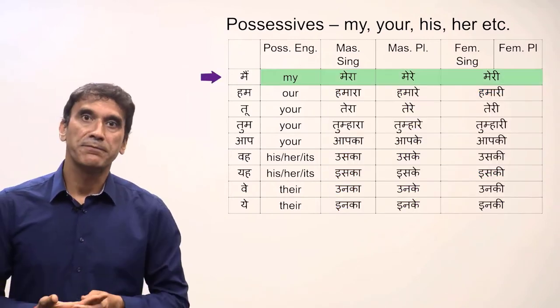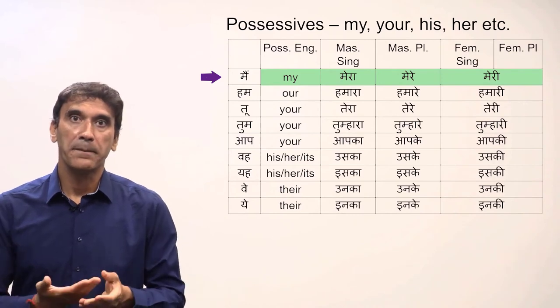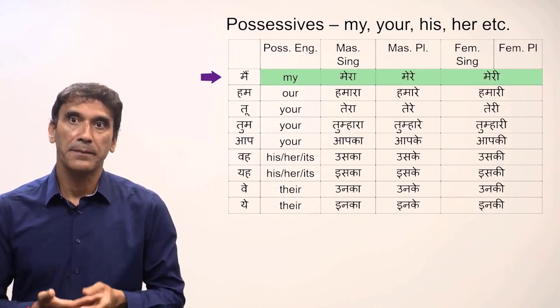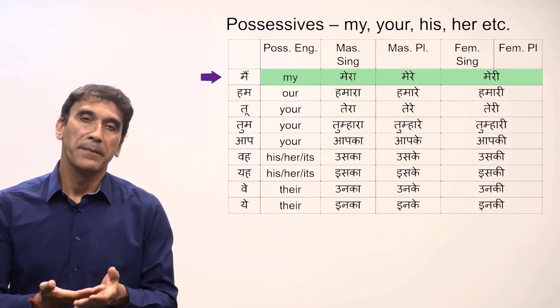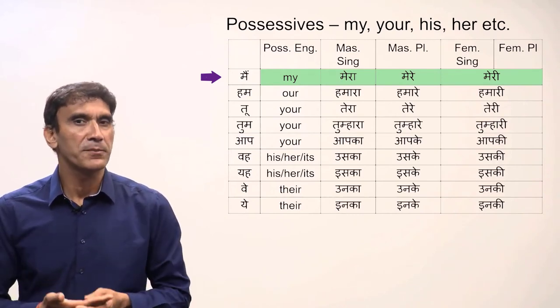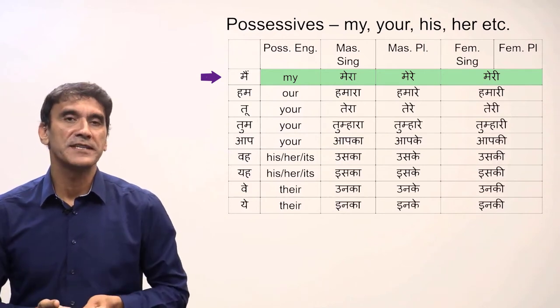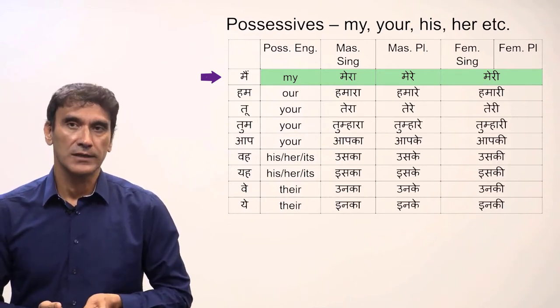For the possessive 'my' in Hindi, the forms are mera, mere, meri. Mera is for masculine singular, mere for masculine plural, and meri for feminine singular and plural.